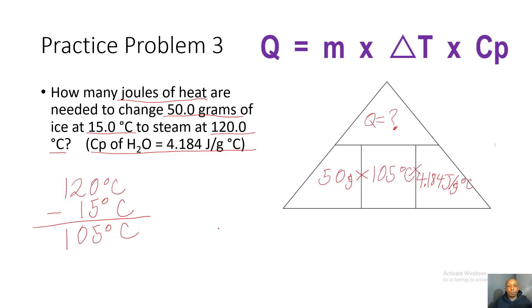Let's check practice problem three. It asks how many joules of heat are needed to change 50 grams of ice at 15 degrees Celsius to steam at 120 degrees Celsius. We're solving for Q. Mass is 50 grams. Change in temperature is 120 minus 15 equals 105 degrees Celsius. Specific heat of water is 4.184 joules per grams degrees Celsius.